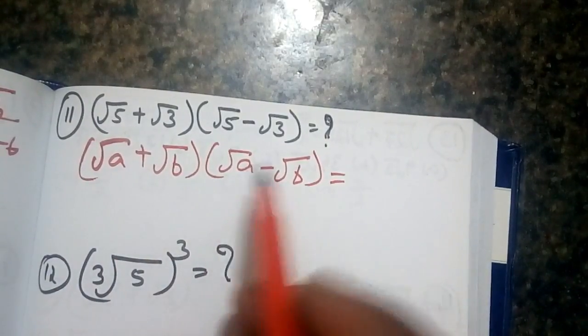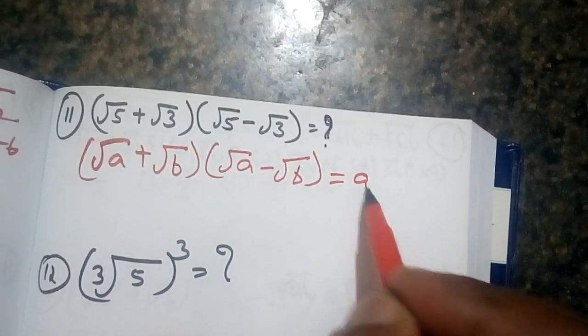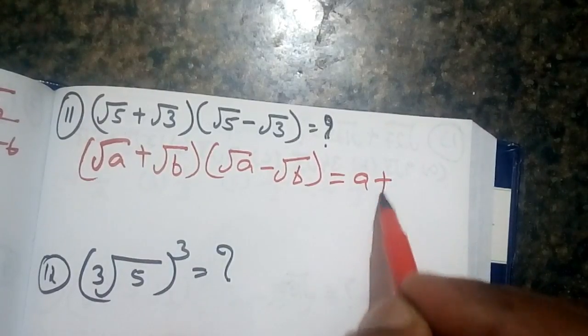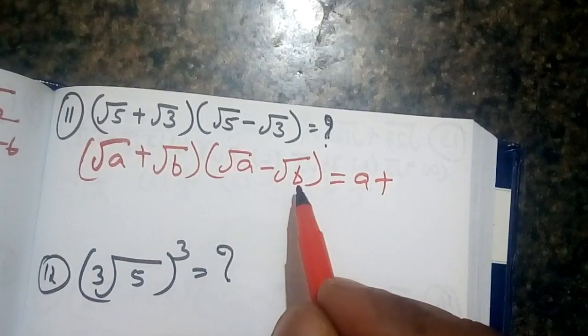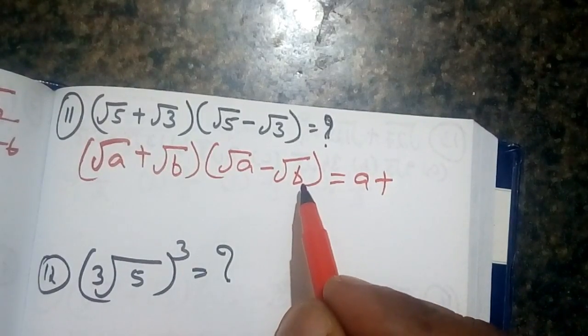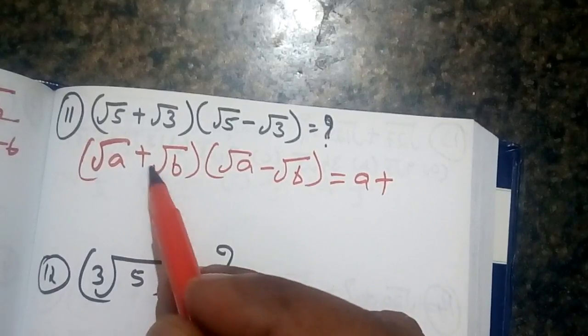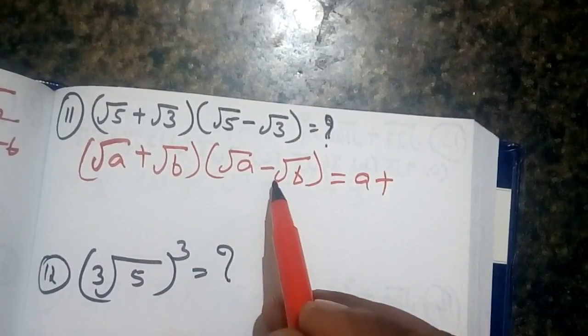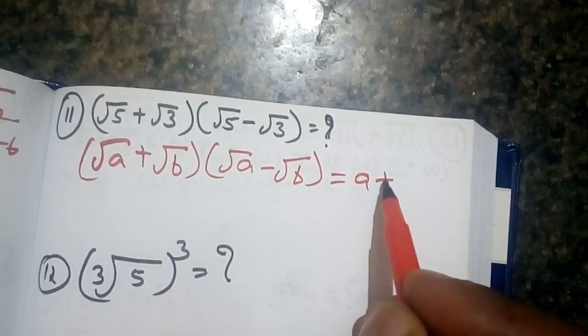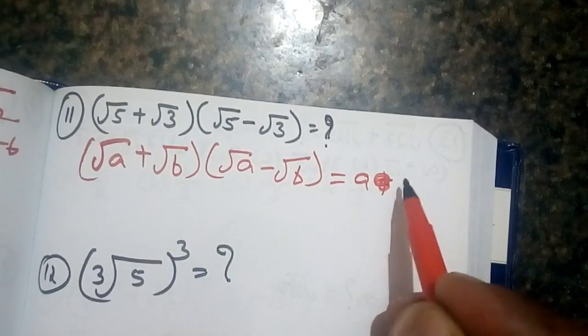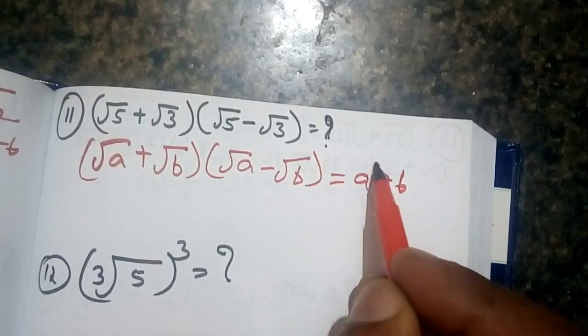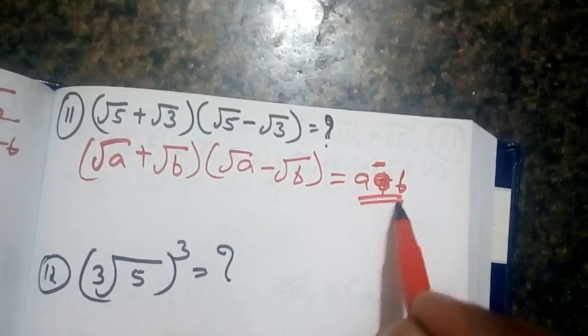So root a is root a. Root b into root b equals root b squared. Root b minus root b gives us zero for those terms. That means the result is a minus b.